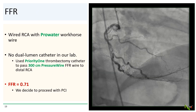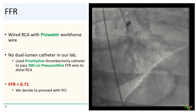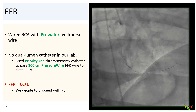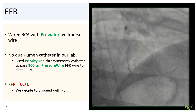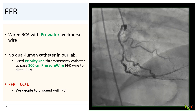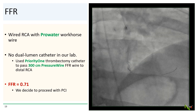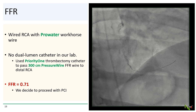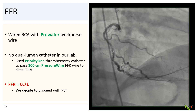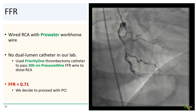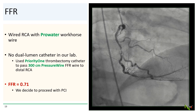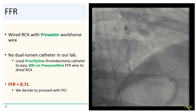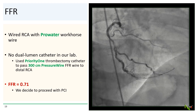Back to our patient: we wired the lesion relatively easily with the Pro-Water wire. We did not have a dual-lumen catheter, but instead used a Priority One thrombectomy catheter to pass a 300-centimeter pressure wire — the FFR wire — over the Pro-Water into the distal RCA. FFR in this case was 0.71, so we decided to proceed with PCI.